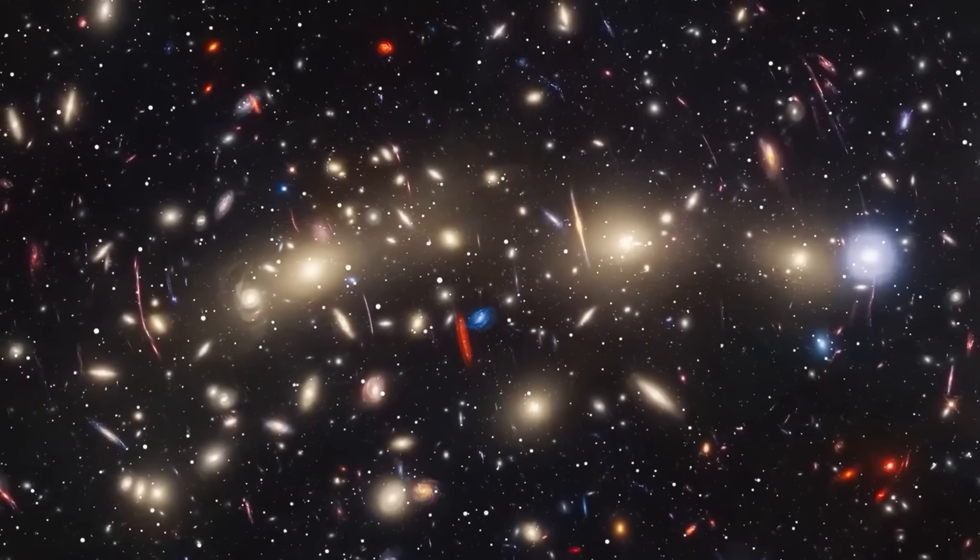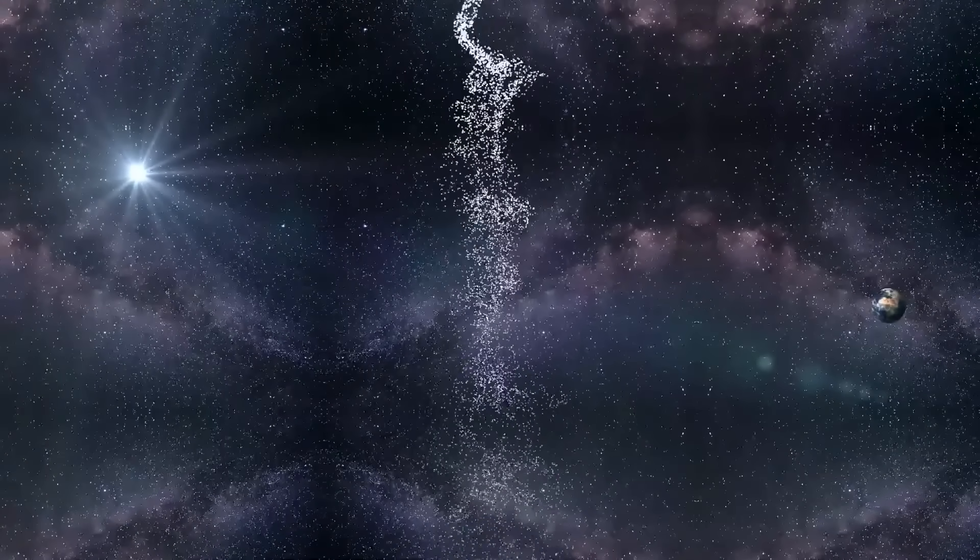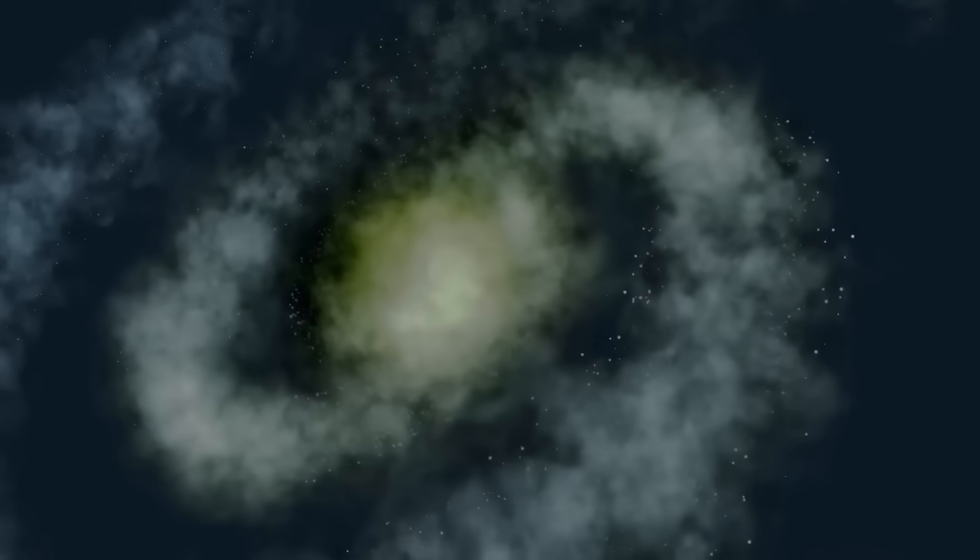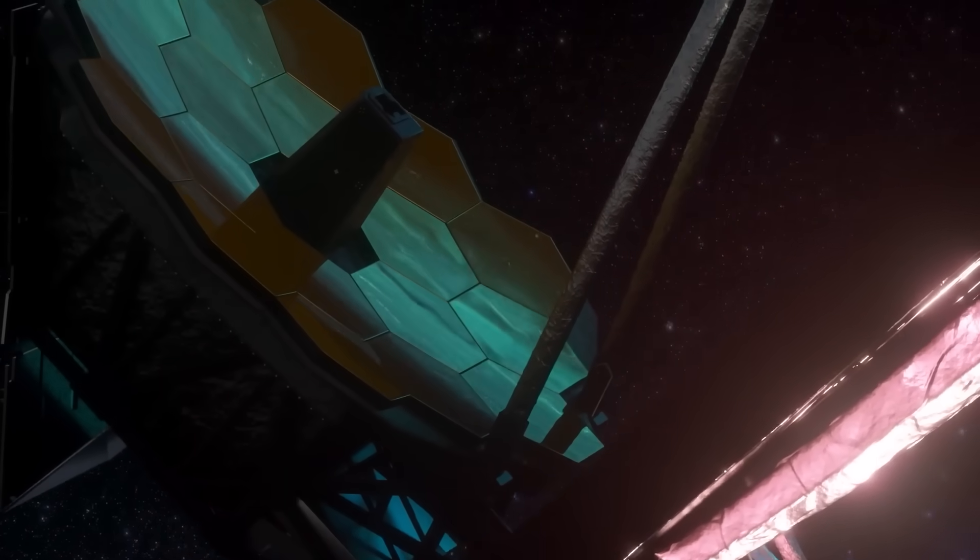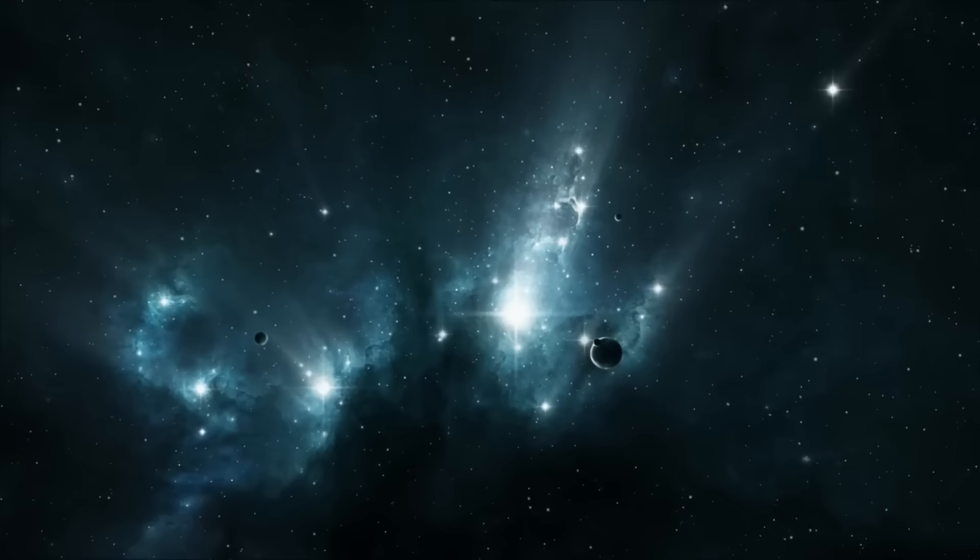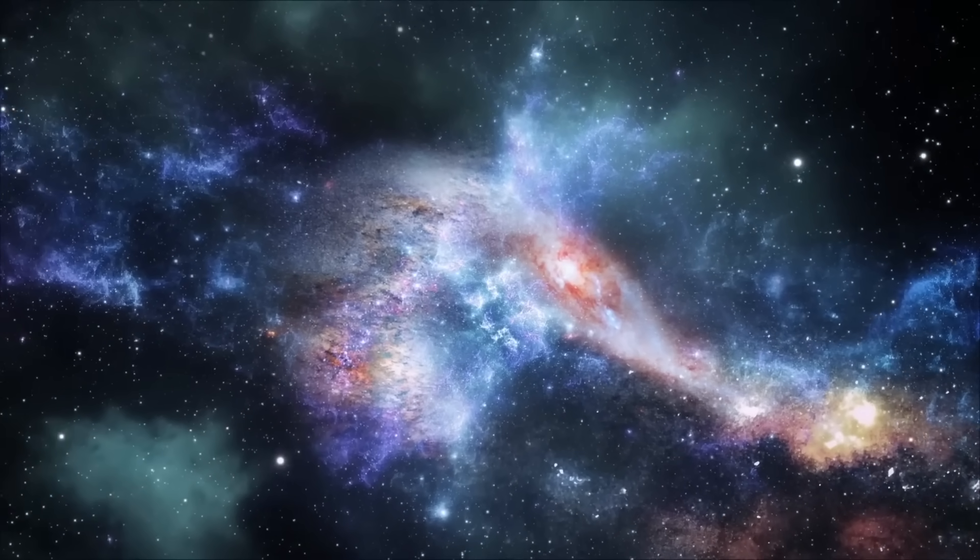The observable universe spans about 92 billion light-years. But this number is not a real boundary. It's a limit of visibility. And Webb is showing us objects so mature at the edges of that observable bubble that their existence implies something terrifying. The universe must have been structured long before the cosmic microwave background was released.